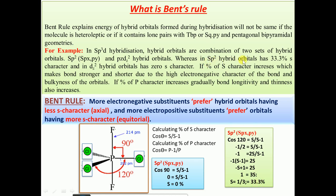The sp2 hybrid orbitals have 33.3% s-character. The pz·dz² hybrid orbitals have 0% s-character, because the bond angle between adjacent atoms in pz·dz² is 90°. Since cos 90° = 0, this makes s = 0. So we find two different bond angles — one with 33% s-character and another with 0% s-character.